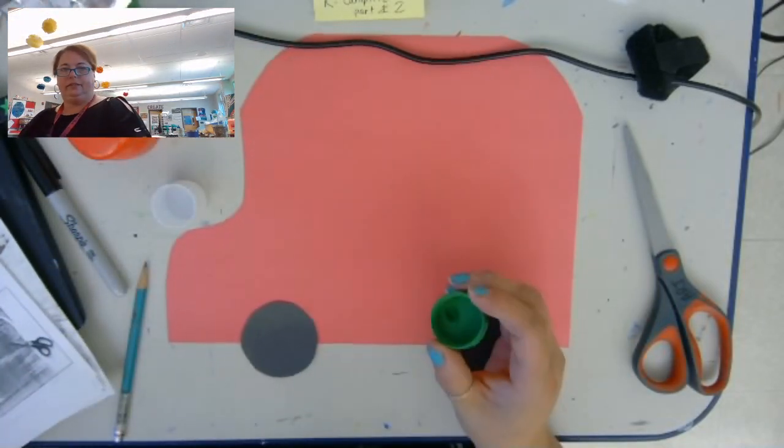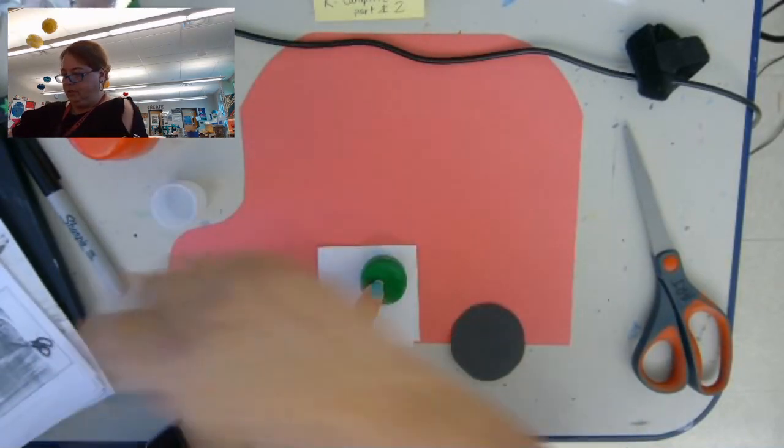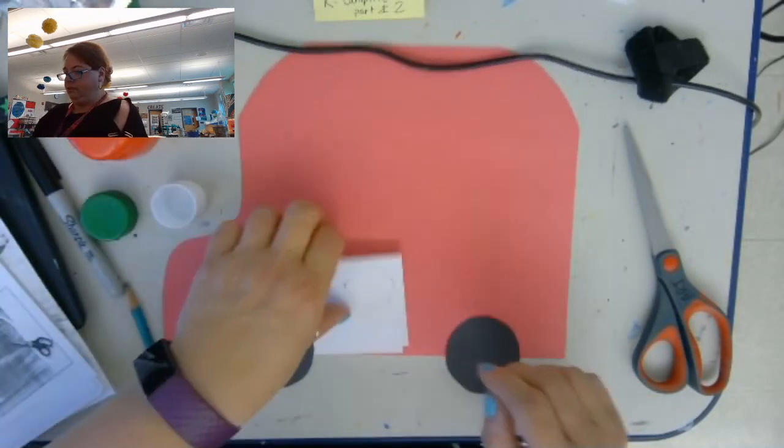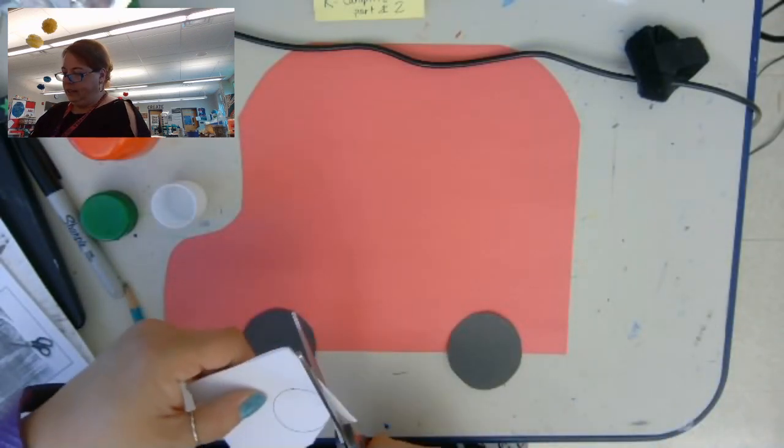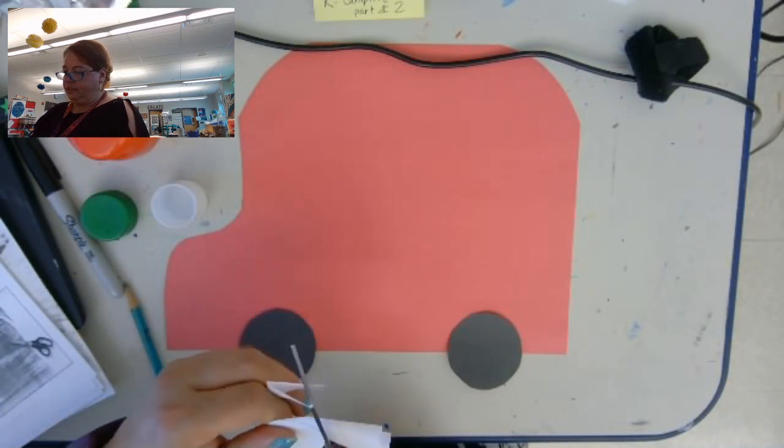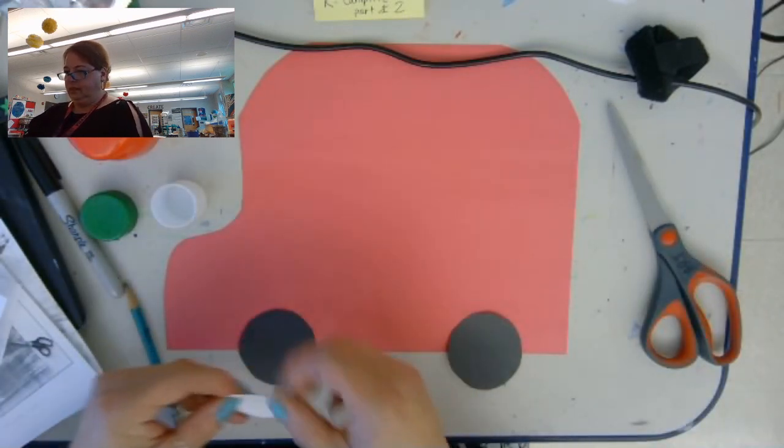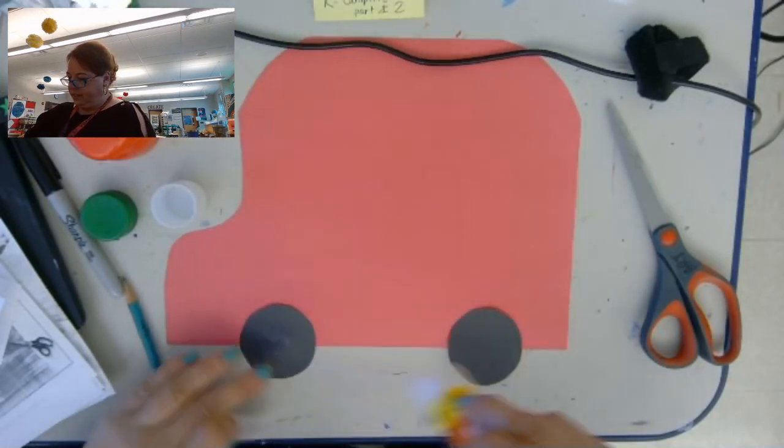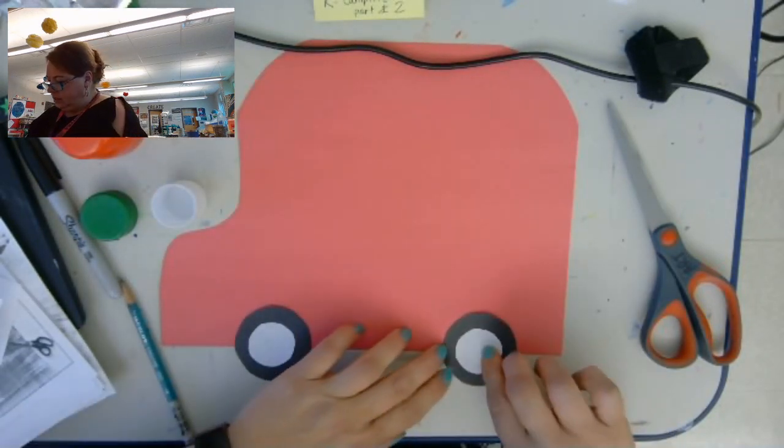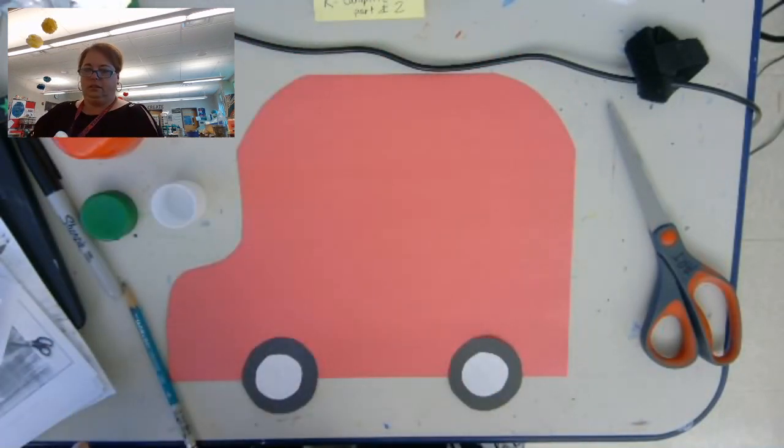Now I'm going to use a smaller lid and I want to trace two white circles to go inside the black tires. I folded my paper again so that when I cut it out, I only have to cut once, but I'll get two pieces for the tires. Then I'm going to glue those right into the center of the black wheel.